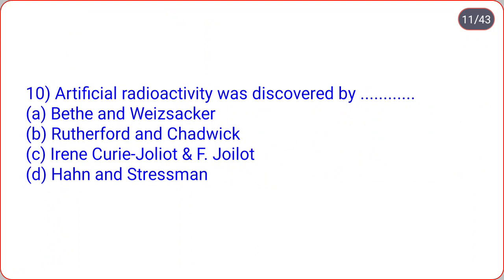The next: artificial radioactivity was discovered by dot-dot. Options are option B.T. and Weizsäcker, Rutherford and Chadwick, Irene Curie Joliot and F. Joliot, Hahn and Strassman. So artificial radioactivity was discovered by Irene Curie Joliot and Joliot, that is option C. Artificial transmutation was discovered by Rutherford and artificial radioactivity was discovered by Irene Curie Joliot and Joliot.